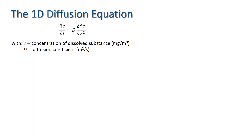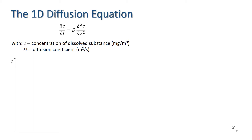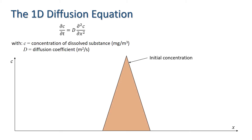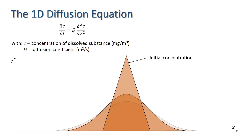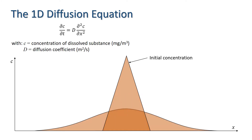What behaviour would we expect to see? If we look at an initial distribution of the concentration which is triangular as shown here, then we would expect the distribution to spread over time in the way illustrated. The area under this curve should remain constant since mass is conserved.